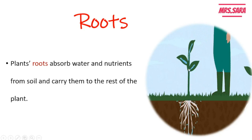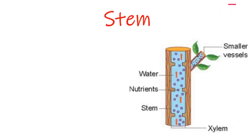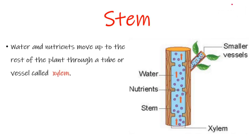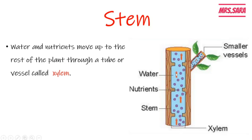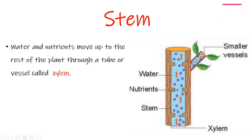The second part of the plant is the stem. Inside the stem there is a channel, tube, or vessel. Water and nutrients move up through this tube to the rest of the plant. This tube or vessel is called xylem.